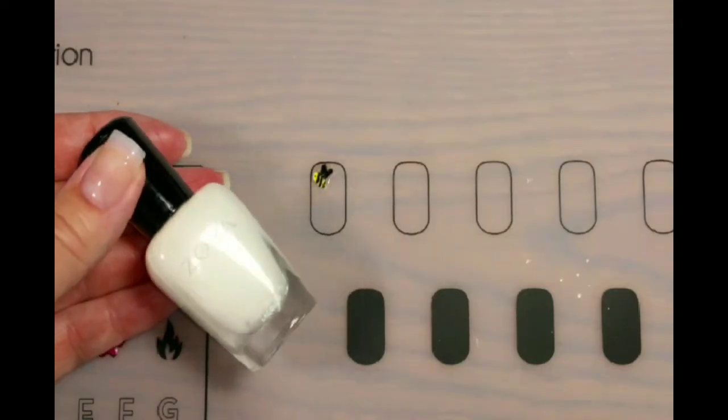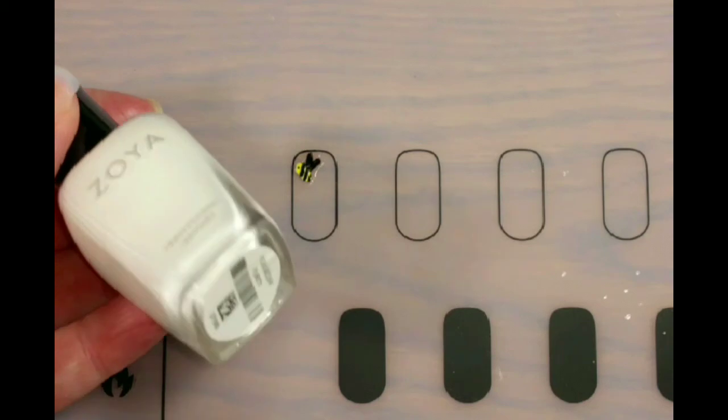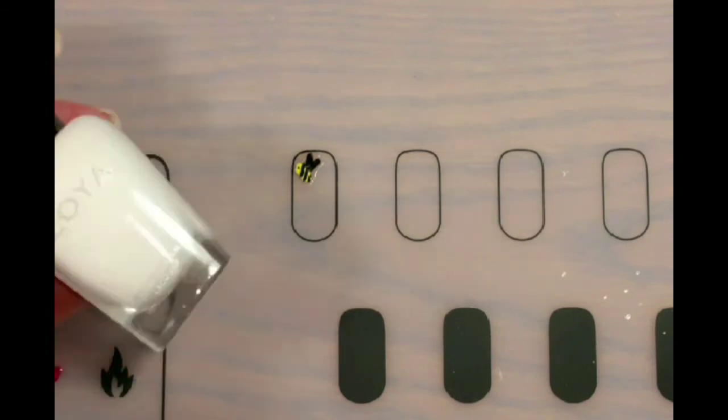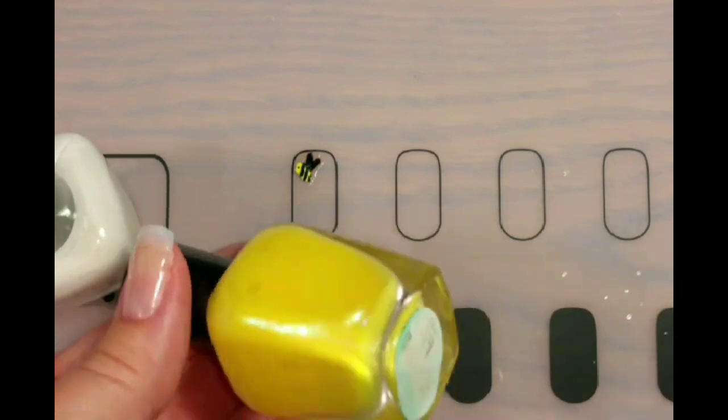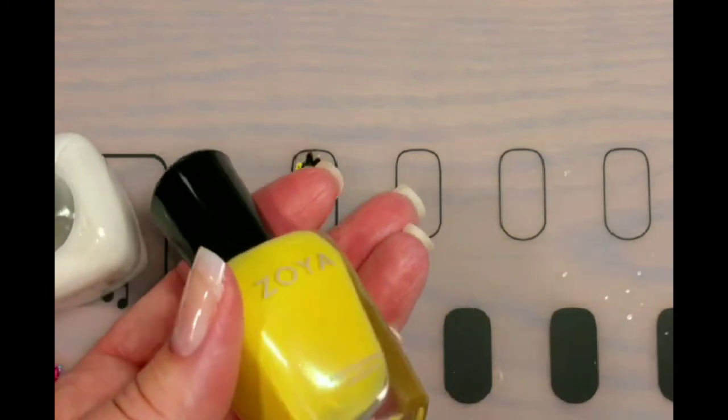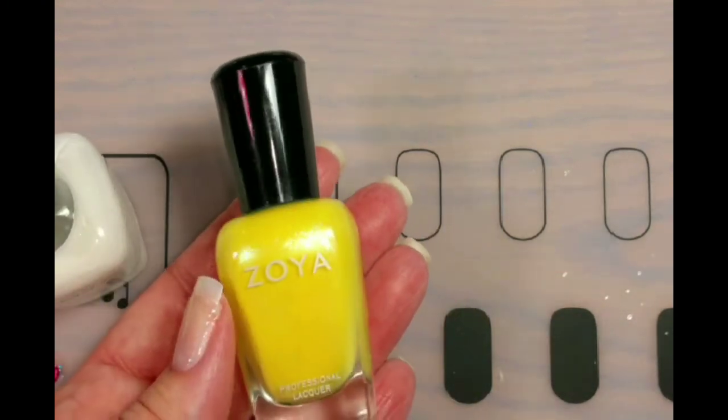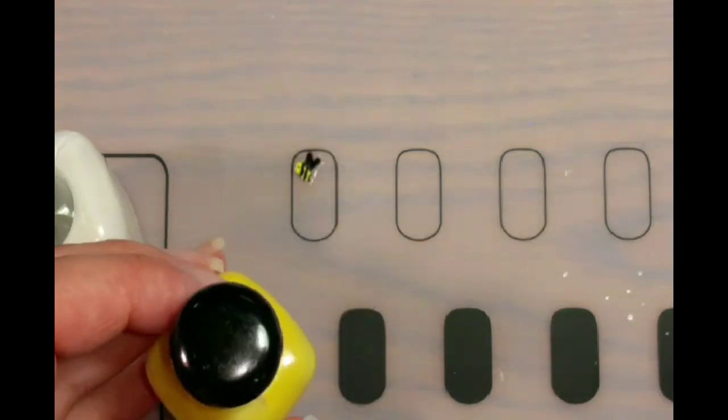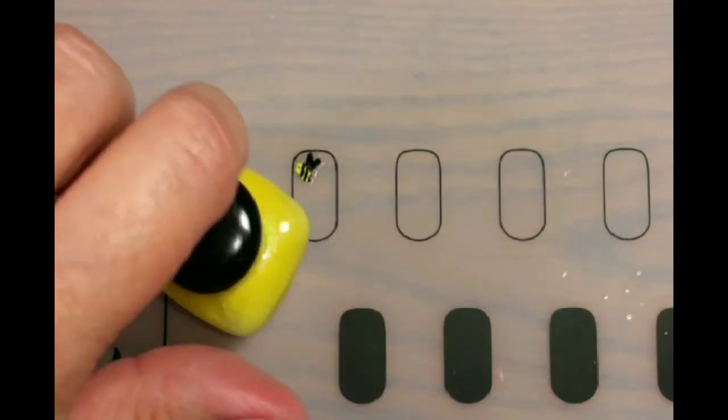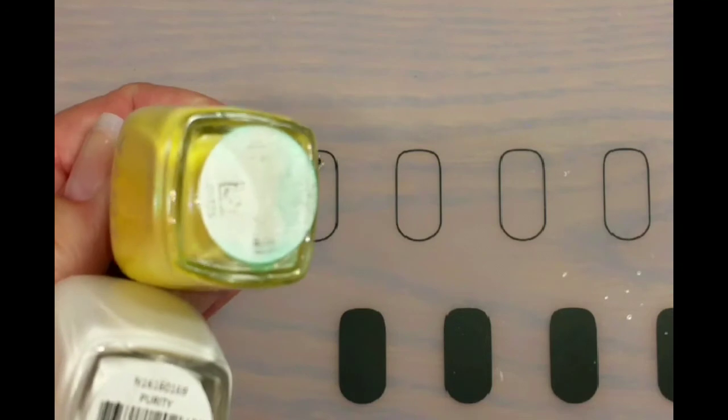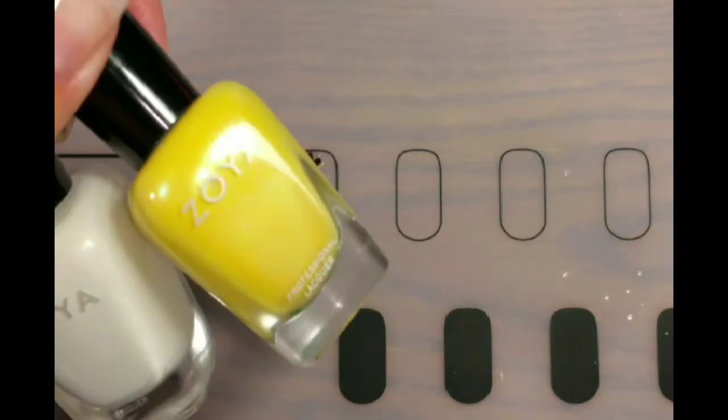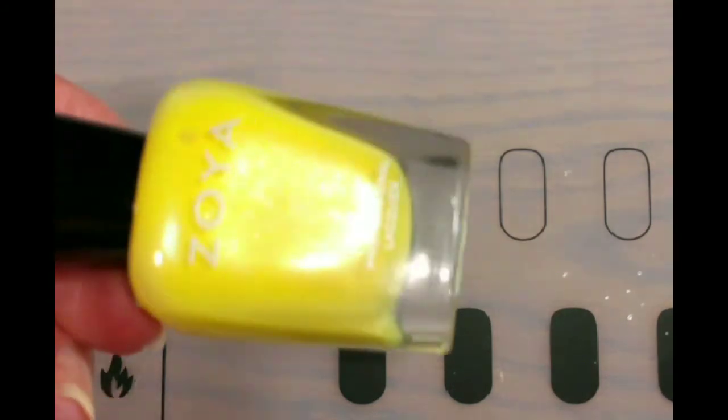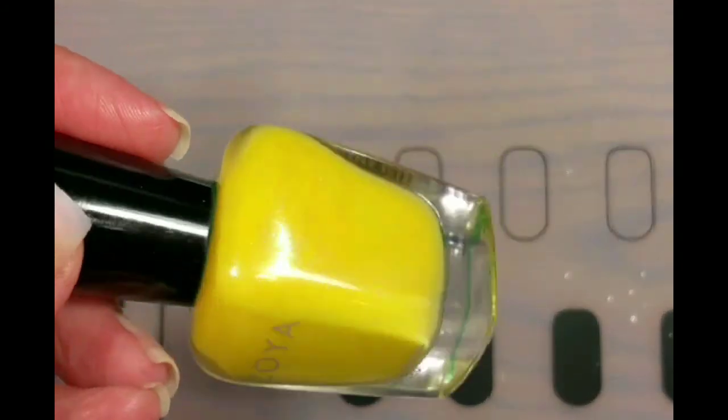So here's what I used to make this little bee. I used Zoya Purity and another Zoya polish because I dropped my whole box of Zoya on the floor and a bunch of it broke and I had to clean up all the mess off of all the bottles so now I have no idea what that one is. But it's pretty and it's yellow and it has sparkles.